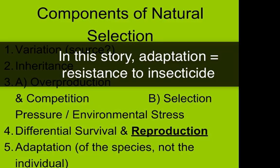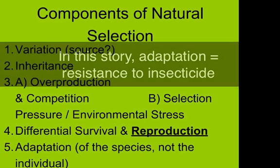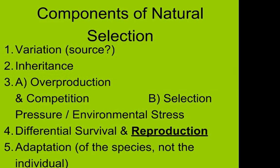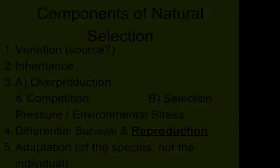Individual flies don't adapt to the environment. A fly born normal is not going to change its DNA to become resistant to the insecticide during its lifetime. Individuals either survive and reproduce at higher rates or die because of the trait they were born with. It may take a while to internalize this, but it's important: the population has adapted, not the individuals — the individuals did not change their traits.